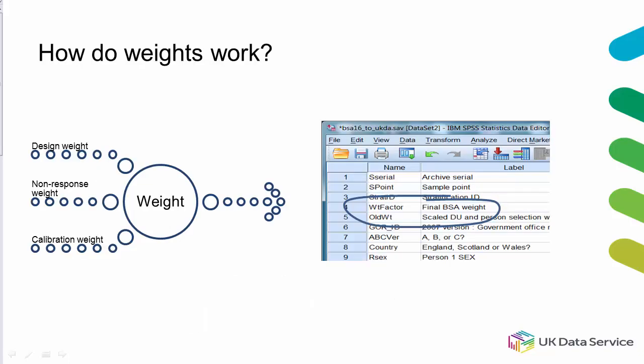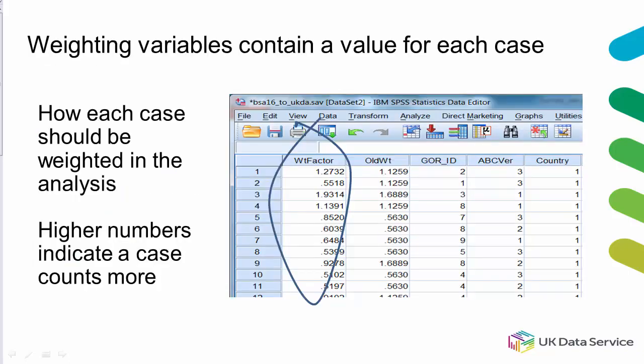Let's take a closer look at how weights work. Usually data producers combine adjustments into a single weighting variable that you'll find in the data set. The weighting variable will contain a value for each case, which indicates how each case should be weighted during analysis.